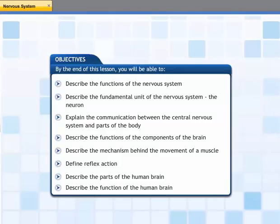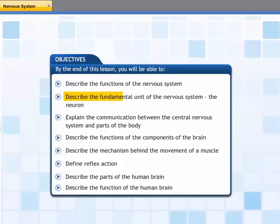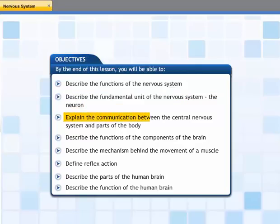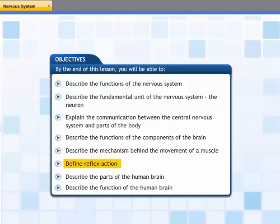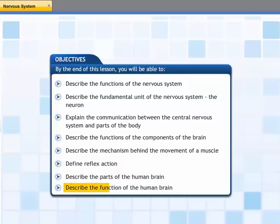In this lesson, you will learn about the nervous system and its components, reflex action, and the structure of the human brain. At the end of this lesson, you will be able to describe the functions of the nervous system, describe the fundamental unit of the nervous system — the neuron — explain the communication between the central nervous system and parts of the body, describe the functions of the components of the brain, describe the mechanism behind the movement of a muscle, define reflex action, and describe the parts and function of the human brain.